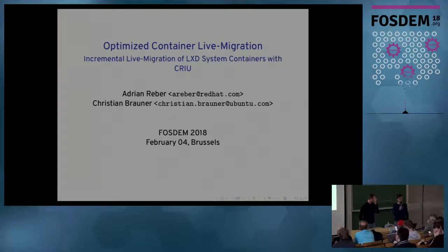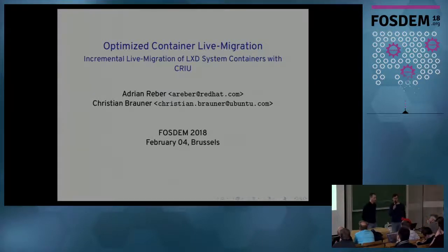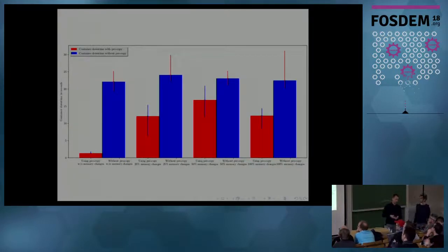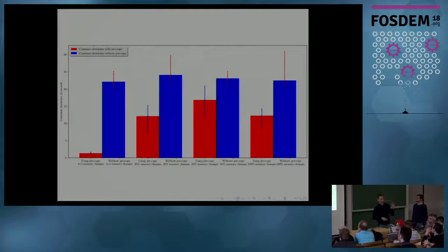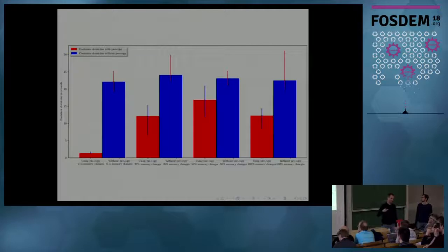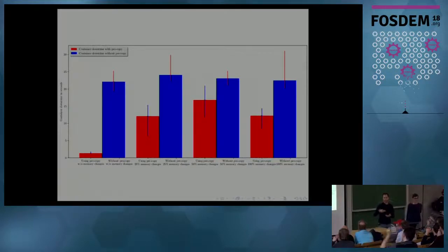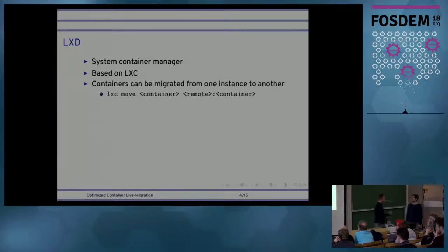As Stefan said, Adrian and I worked together on bringing optimized container-led migration to LXC and LXD. So, first slide — those are the results. The red bars are the optimized container migration and the blue bars are the unoptimized container migration, live migration, on a scale of seconds. You can see for all our different test cases, the optimized case was always better than the unoptimized case.